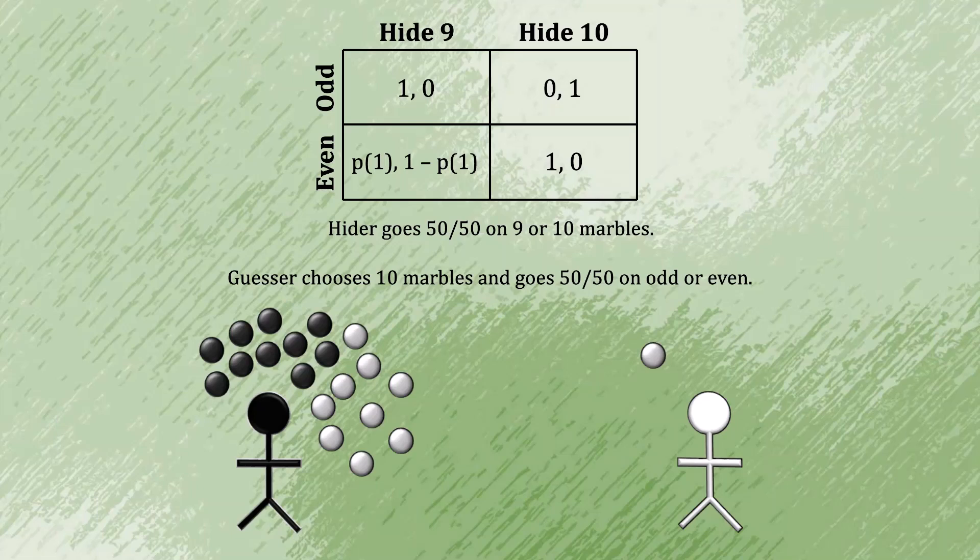In turn, the player on the left, who in the second round is the guesser, knows for sure to choose odd. Thus, they will be guaranteed in the second round to acquire that final marble. In turn, we know the ultimate probabilities of winning given a first round outcome of an even guess and hiding 9. The hider will certainly emerge victorious eventually, whereas the guesser in that first round is doomed to lose.